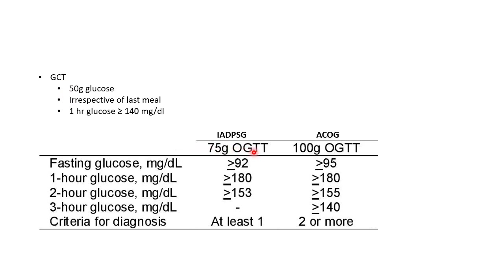Now let us see about the oral glucose tolerance test. IADPSG recommends a 75 gram oral glucose tolerance test. We give 75 gram of oral glucose after overnight fasting and measure blood glucose values at fasting, 1 hour, and 2 hours. The criteria for diagnosis is at least one value should be abnormal. The cutoffs are: fasting blood glucose greater than or equal to 92, 1-hour blood glucose greater than or equal to 180, and 2-hour blood glucose greater than or equal to 153 mg/dL. This is the criteria followed in most places in India.